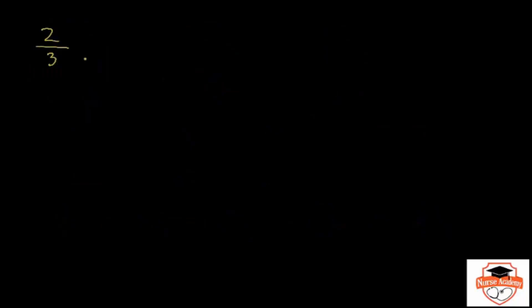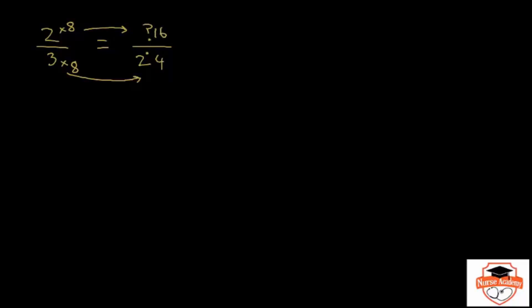Let's say two thirds is equivalent to a certain fraction — something over 24. Can you find out this number? For equivalent fractions, the numerator and the denominator must be multiplied with the same number. So all you need to do is relate 3 with 24. You know that 3 times 8 is 24, therefore on the top it also has to be times 8. Therefore 2 times 8 is 16. So two thirds is equivalent to 16 over 24.